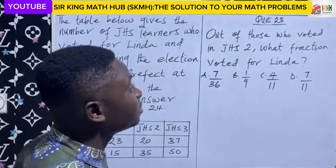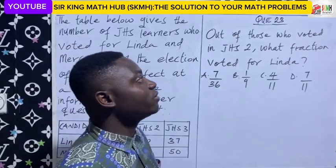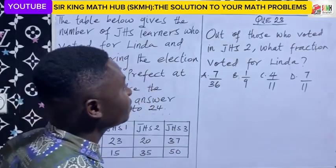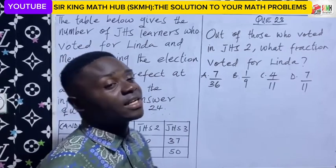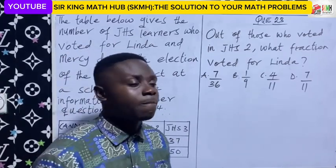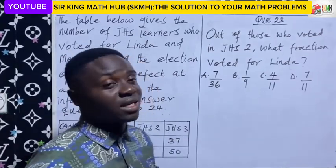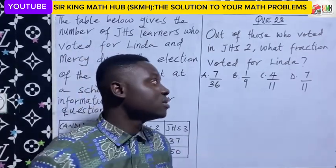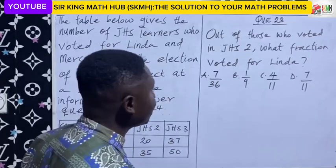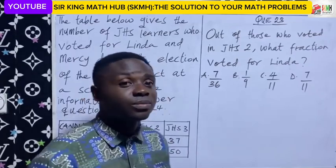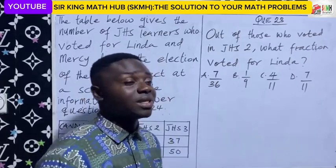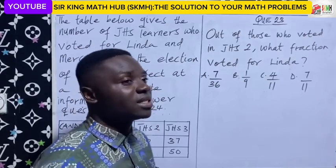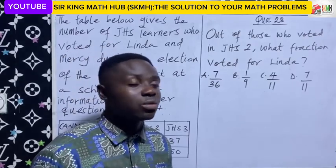I read: out of those who voted in JHS2, what fraction voted for Linda? So this question is clearly about fractions, and we know that a fraction represents part of a whole.